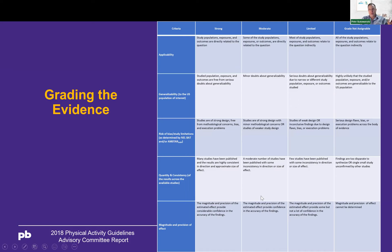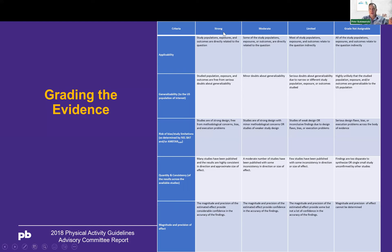I want to show you how we graded the evidence so you'll understand when I talk later about strong evidence, moderate, limited, or grade not assignable. We have criteria down the left-hand column — like applicability, generalizability, risk of bias, consistency of the association — and we used these criteria to judge the strength of the evidence, for example for the association between physical activity and heart disease. On the far right side, the grade not assignable is where we really didn't have any evidence to make any statement. You'll see that come up when we talk about device-based evidence.